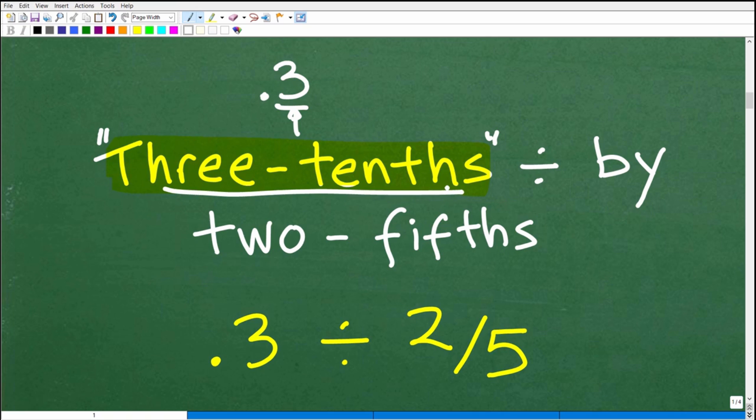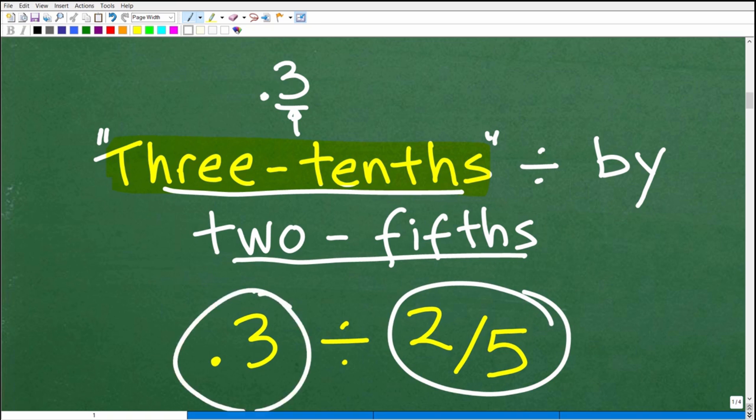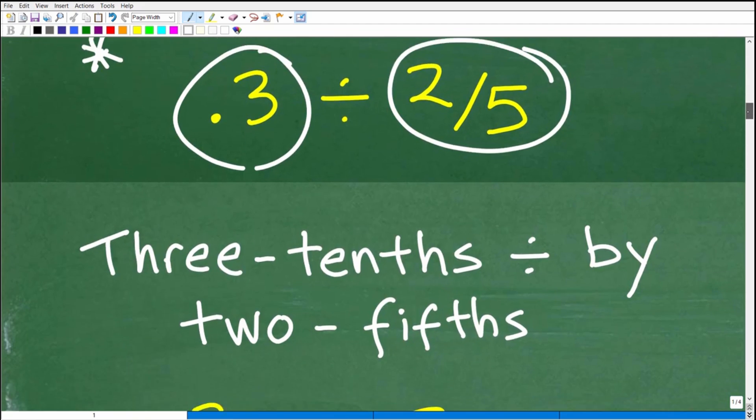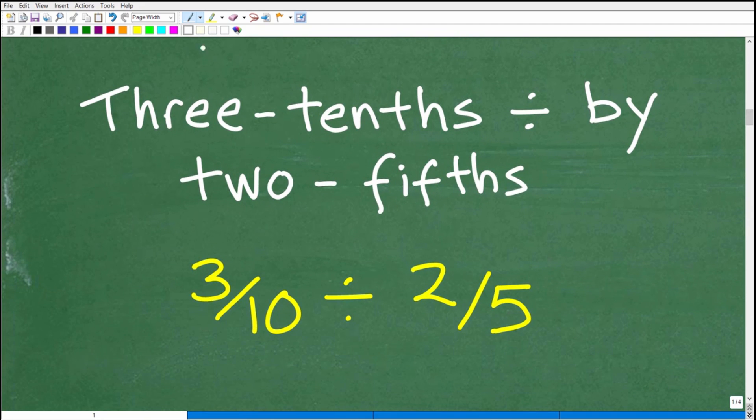Now, you can write that as a fraction. I'll show you that in a second. And that's going to be divided by 2 fifths. So 2 fifths, you can write as a fraction 2 over 5. So we could think of this problem as 0.3 divided by 2 fifths or 3 tenths divided by 2 fifths. But again, if we're not using our calculator, we really want to work all in either decimals or all fractions. Now, this approach right here I don't think is the easiest approach. And let me go ahead and show you what I think is the better approach to do this problem is to write this all as one fraction problem.